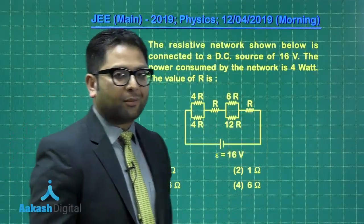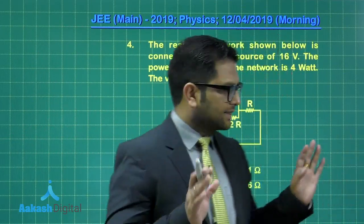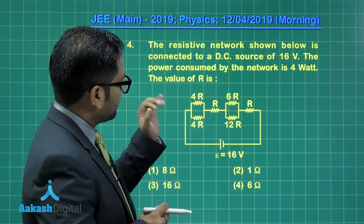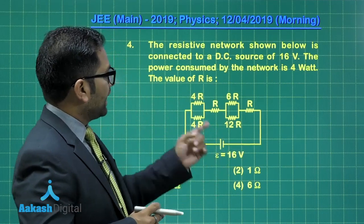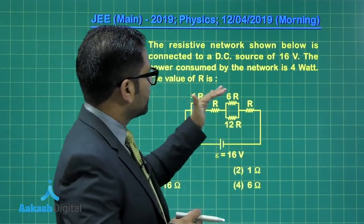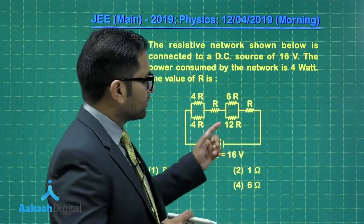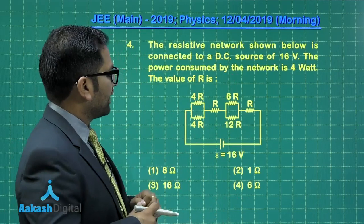The next one from current electricity, a question related to circuit, but not a complex one. A slight bit of calculation is required. There is the resistor network, and that has been fed by an EMF of 16 volt, and it says the power consumed by the network is 4 watt. The entire network consumes 4 watt of power, and we need to calculate the value of R.